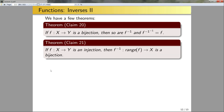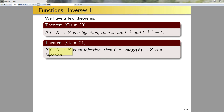Claim 21: if f maps from X to Y and is an injection, then f⁻¹ mapping from the range of f to X is a bijection. We need to show f⁻¹ is a function and that it's both injective and surjective. The key issue is that f is an injection but may not be a surjection. By restricting f⁻¹'s domain to the range of f, it becomes surjective by definition. The proof is in the book; ask in office hours or on Piazza for questions.